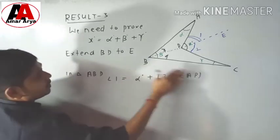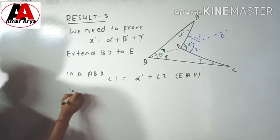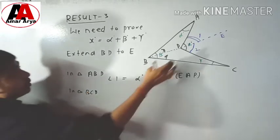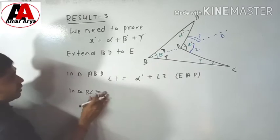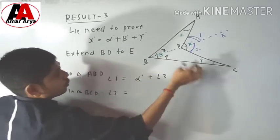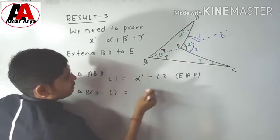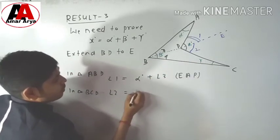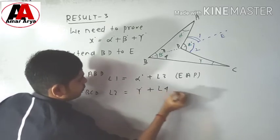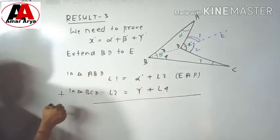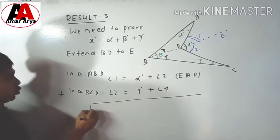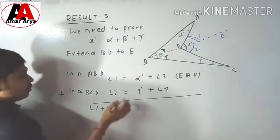In triangle BCD, you can see the exterior angle, which is angle 2. The value of angle 2 will be angle 4 plus gamma. So we can write: angle 2 equals gamma plus angle 4. After that we will add angle 1 plus angle 2.